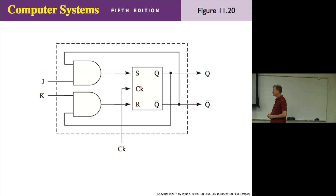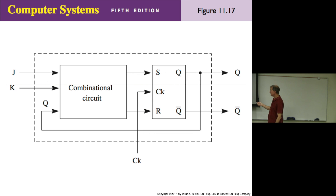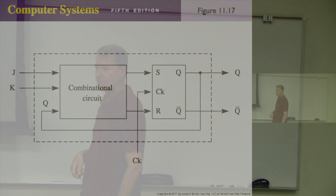Those two AND gates correspond to the combinational circuit black box from the previous unit — and that's a good observation. These two AND gates shown in figure 11.19 are the interior of that combinational network block in figure 11.9. They are the combinational circuit. Is everybody clear on how that worked?